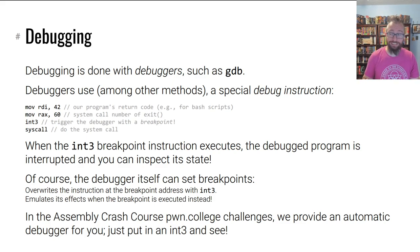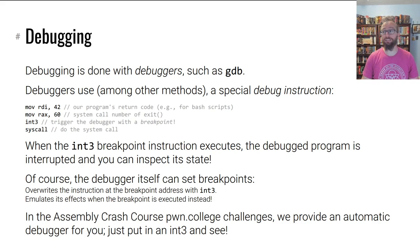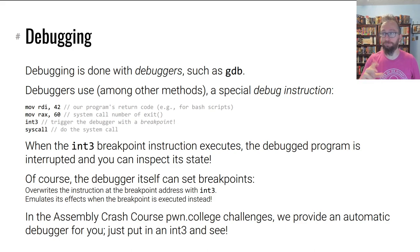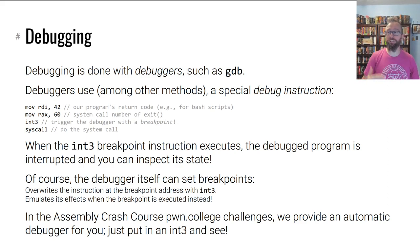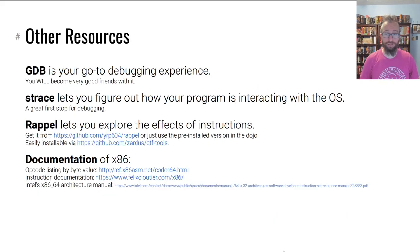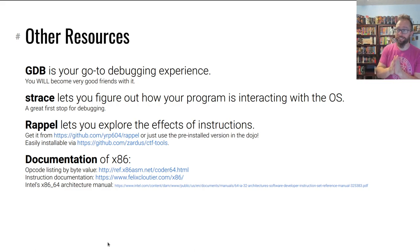Specifically in the assembly crash course challenges on Pwn College, we provide an automated debugger for you. Any time your code calls int 3 in a challenge, we'll give you a helpful printout of the program state and pause until you hit Enter. That will make it easier — you don't have to learn GDB yet. We'll hold your hand for now, but you will need to learn GDB eventually.